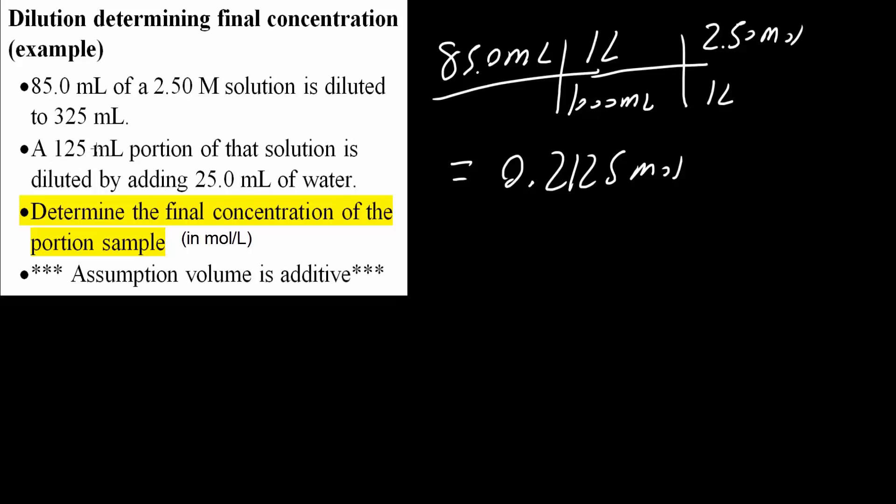A 125 mL portion of that solution. Of the 325 mL solution. So we have a fraction. We have 125 mL and we also have 325 mL. This is our total volume. Now we're taking 125 mL of this and we're going to separate it out. We're going to make it into a portion.